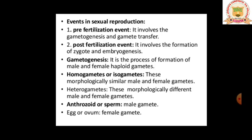In heterogametes, the male gamete is called antherozoid or sperm, and the female gamete is called egg or ova. Please remember in gametogenesis: first write the definition — the process of formation of male and female haploid gametes is known as gametogenesis. Then note that gametes are of two kinds: homogametes or isogametes, and heterogametes.